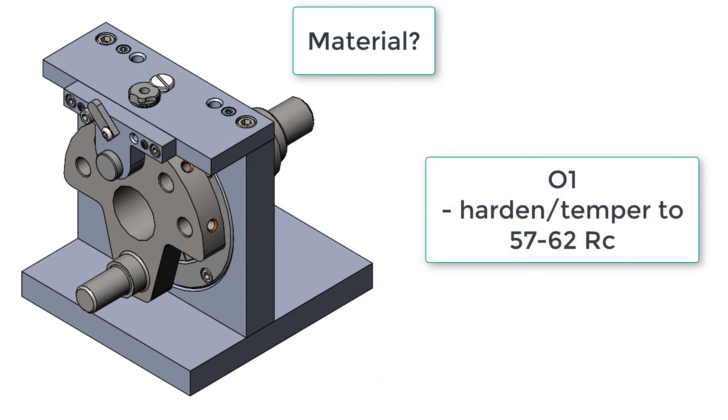And for all of our O1 parts, we would put on the drawing that we would like a Rockwell C hardness of 57 to 62 so that they're well tempered and last as long as possible. In the next video, we'll do one more examination of the jig to look for any missing items or elements.